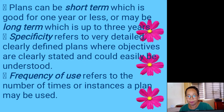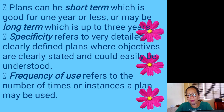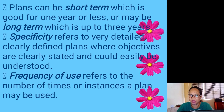Plans can be short-term, which is good for one year or less, or long-term, which is up to three years. Specificity refers to very detailed, clearly defined plans where objectives are clearly stated and could easily be understood. Be specific in what you plan. Frequency of use refers to the number of times or instances a plan may be used — meaning, how many times you need to execute that plan until you reach your target goals.